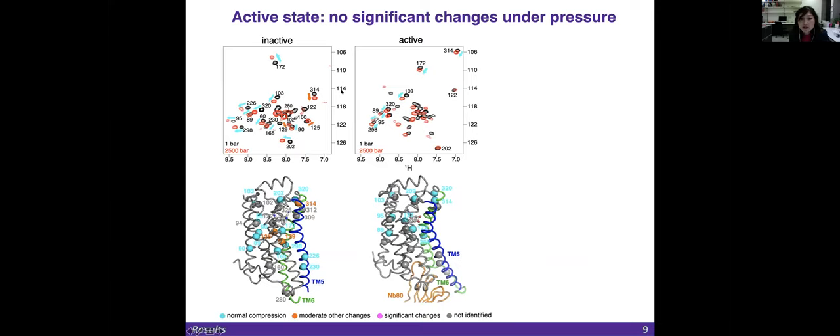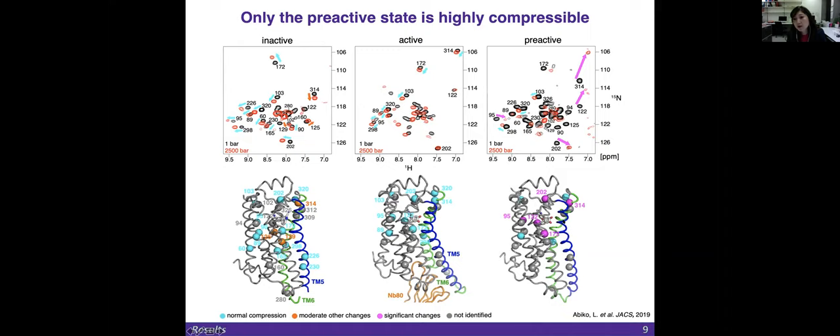We see the same for the active state. On the other hand, in the pre-active state where we have the agonist, we see big shifts and they go in the opposite direction, showing that the hydrogen bonds are getting stretched. We map these big changes and we see that they are around the ligand binding pocket, meaning that here it's more compressible than in the inactive or the active state.